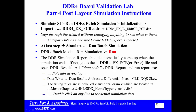If the report does not come up automatically, go to the DDR4 Example PCB directory and open DDR Results All — a new directory with a date code after it, so it'll be DDR Results All Date Code. Then go to the directory within that called DDR Report and click on Report EXE, which is an executable that will build a detailed report. When it opens up, note the tabs across the top: Data Write, Data Read, Address, Differential Nets, Clocks.